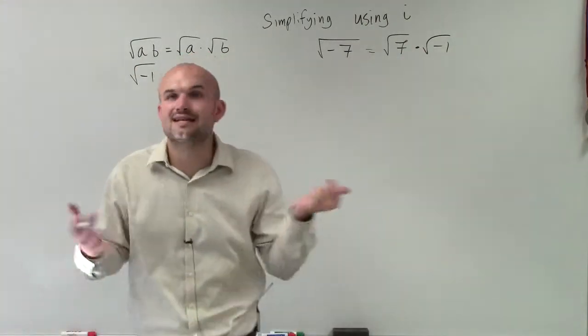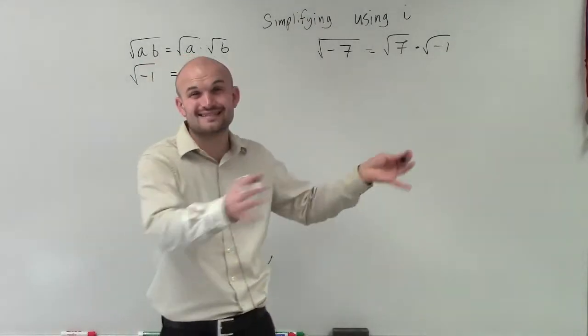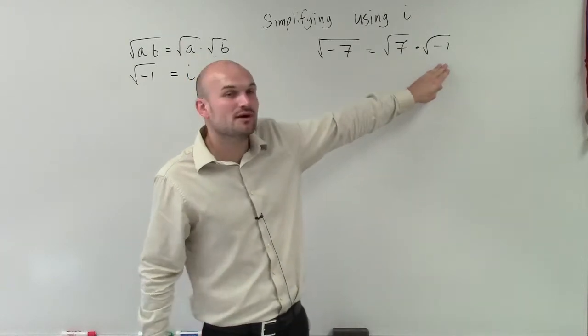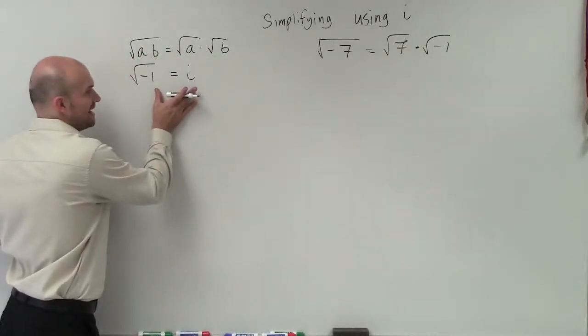Now the square root of 7 is an imaginary number. It's 2.6457513 and so on, going on and on forever. So I can't simplify this. However, the square root of negative 1 we recognize is i.